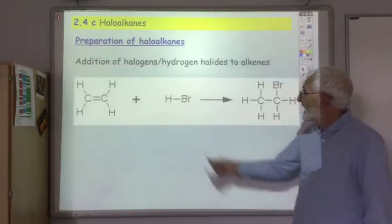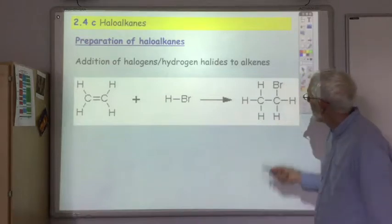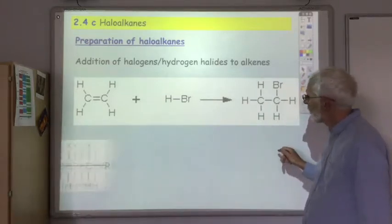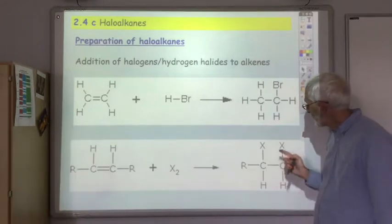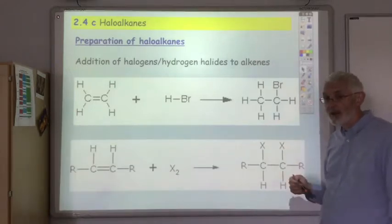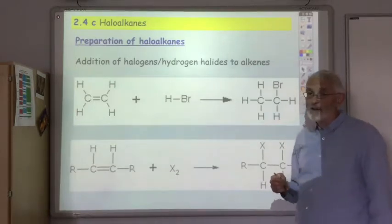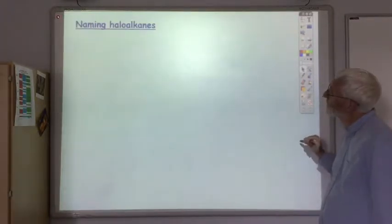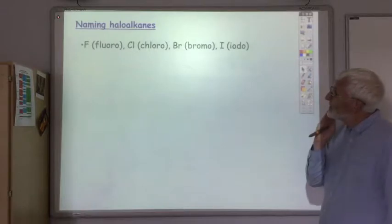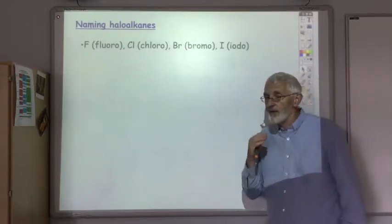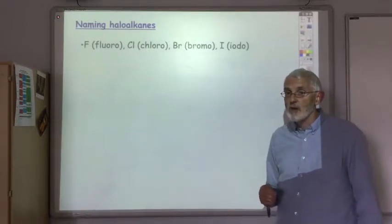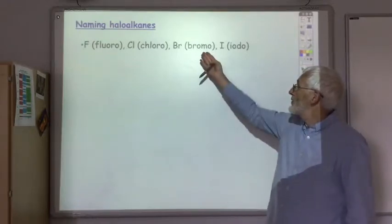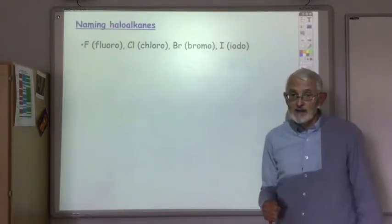If we add the hydrogen halide then we get a mono haloalkane, whereas if it's a halogen we're adding we'll get a dihaloalkane. Next let's look at how we name these haloalkanes. If it's a fluorine atom that's on the haloalkane we call it a fluoro group. Chlorine is chloro, bromine is bromo, and iodine is iodo.